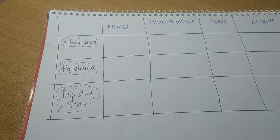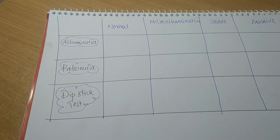They are different and have different clinical importance. Proteinuria means the presence of protein in urine, and albuminuria means the presence of albumin in urine. Albumin itself is a protein. In urine, proteins are of two types: high molecular weight protein and low molecular weight protein. Albumin is a high molecular weight protein.